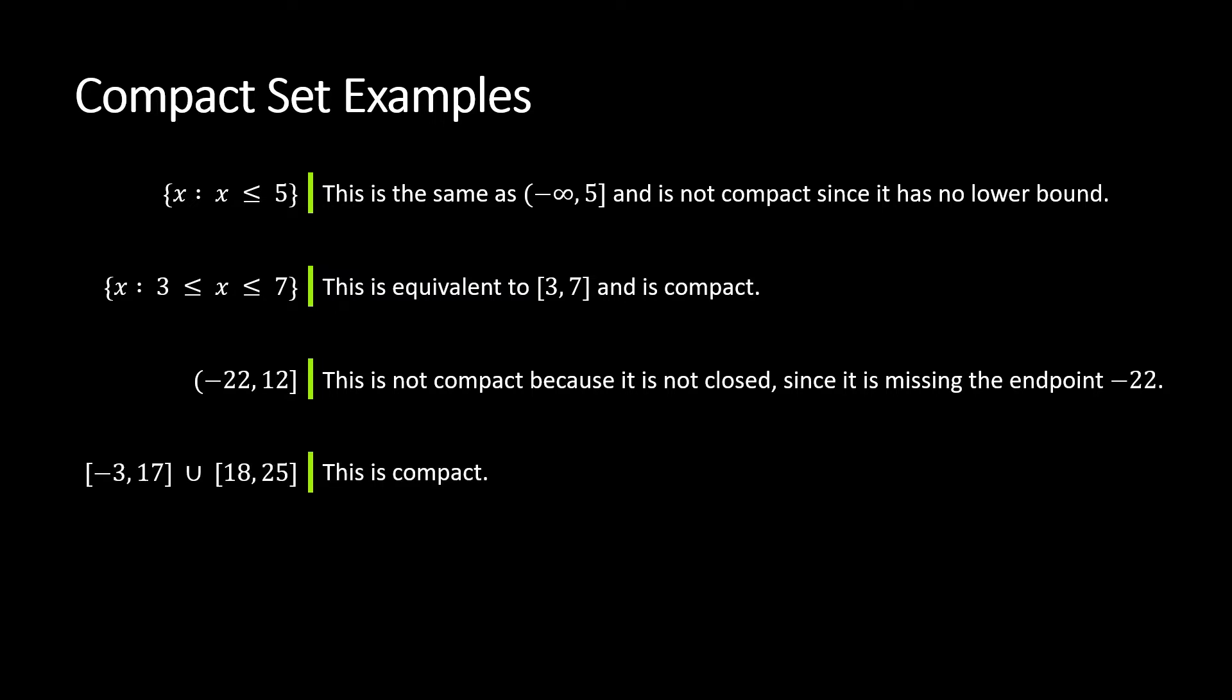Just because we're talking about intervals mostly, it doesn't have to be an interval. I could have multiple intervals. So this is still compact. I could pick something that is to the left of all of this. Like negative 5 is smaller than everything listed here, and 30 is bigger than everything listed here. And importantly, I have all of the endpoints. So I have this endpoint, I have 18, I have 17, I have minus 3. All of those are in there. So this is a compact set.